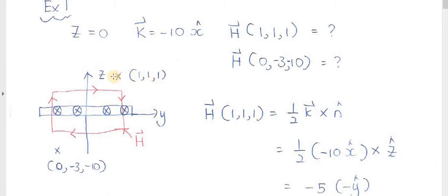So (1,1,1) will be here, and (0, negative 3, negative 10) will be here. So one point will be above the plane, the other point will be down the plane.